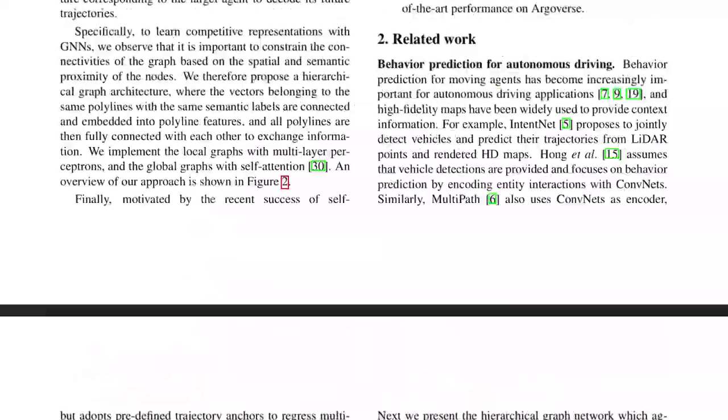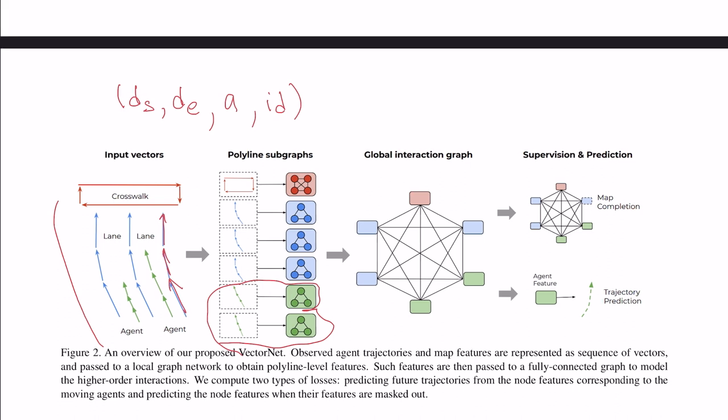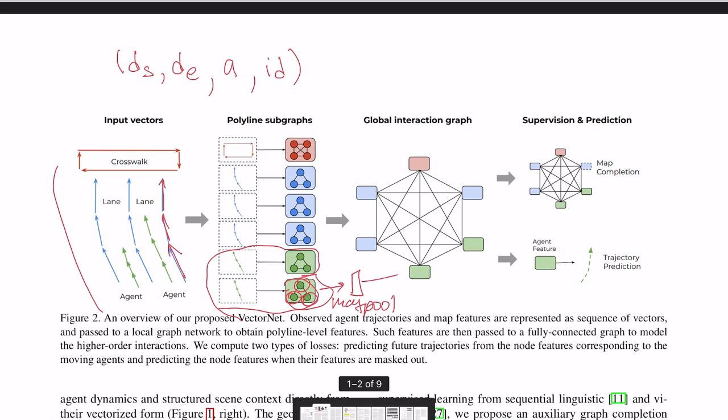But at the end, we are not really interested in the features of individual vectors. And that's why for the polyline, we want to compute a single feature. That's why when we have a feature vector for every individual vector, we just take max pooling and just get a single feature vector for entire polyline. And so these max pooled features are already represented here.